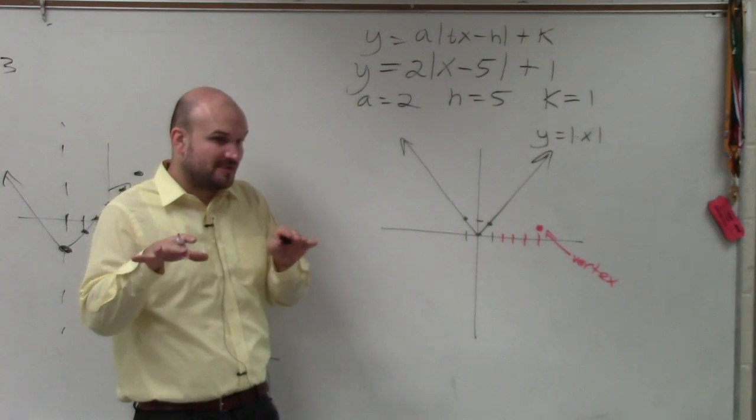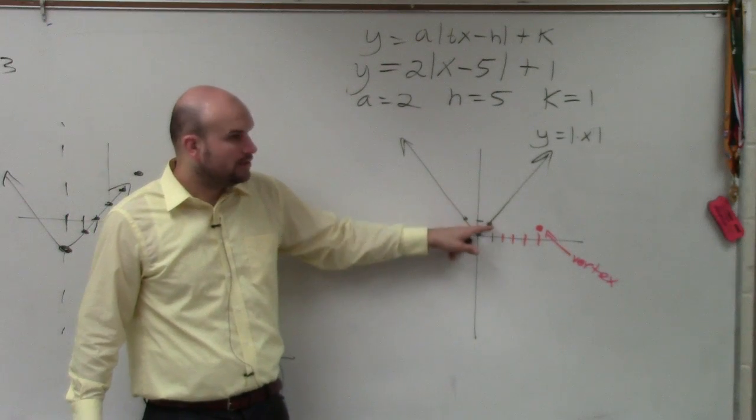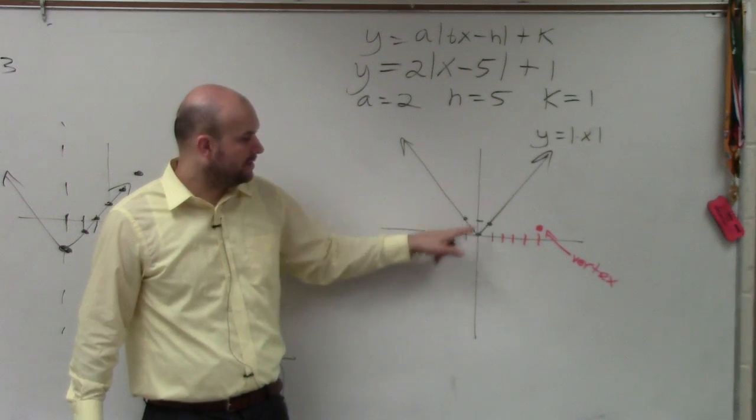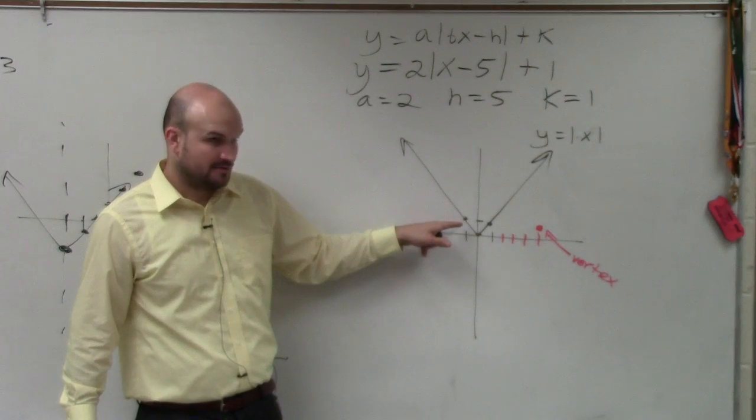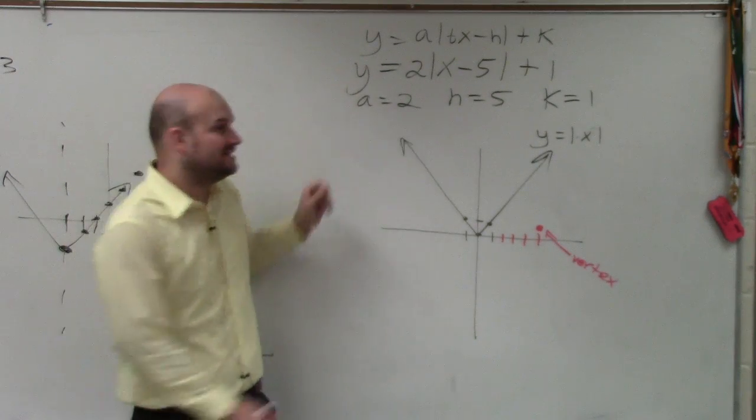Now, remember we talked about the parent graph. The parent graph has a slope of up 1, over 1, up 1, over 1, up 1, over 1, right? But now, a is affecting that.